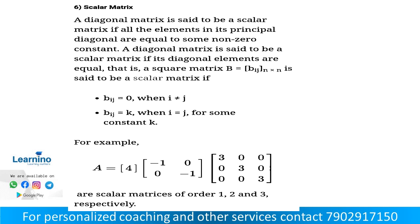Next is scalar matrix. A scalar matrix is also a diagonal matrix. In a scalar matrix, the principal diagonal elements are all equal to some non-zero constant. A diagonal matrix is said to be a scalar matrix if all its diagonal elements are equal.